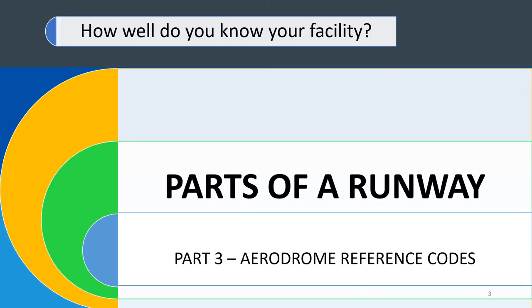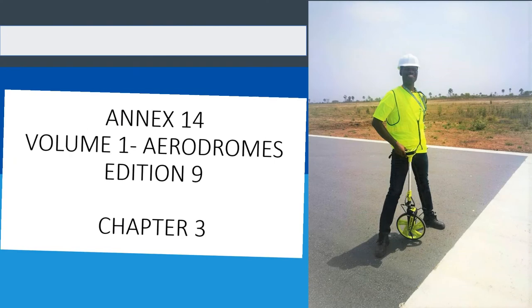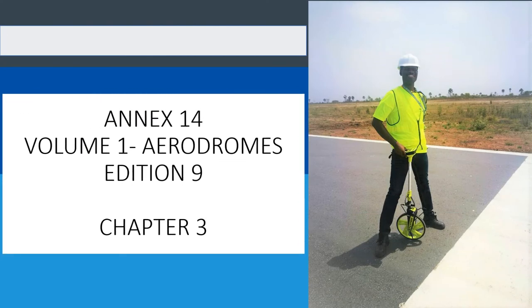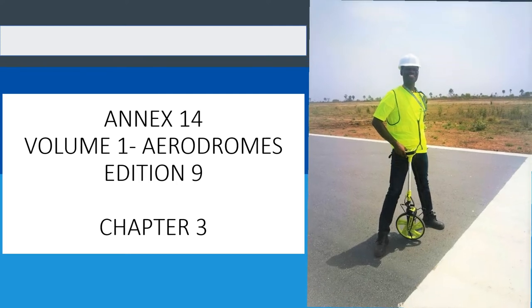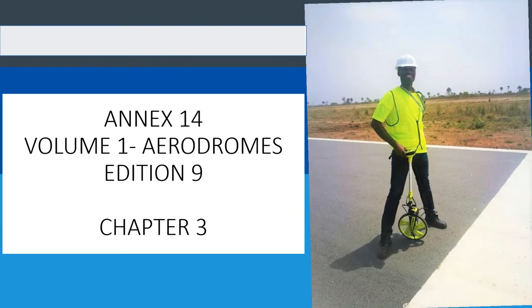We are still dealing with the topic 'How well do you know your facility,' and I am taking this opportunity to take us through Annex 14. We have been looking at parts of a runway for some time now, and today our topic will be on the aerodrome reference code. Our focus will be to go through Annex 14, Volume 1, Aerodromes, Edition 9, Chapter 3. We will be using this document as our main reference.